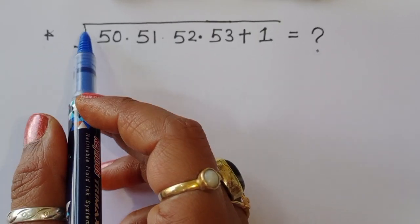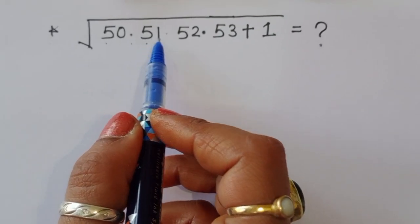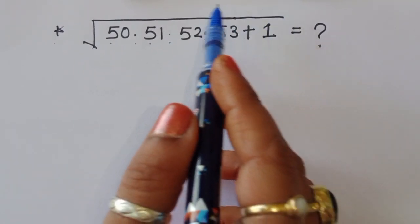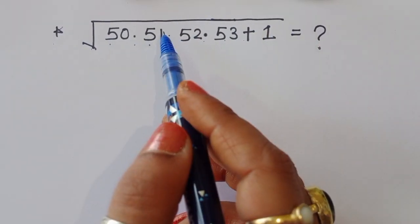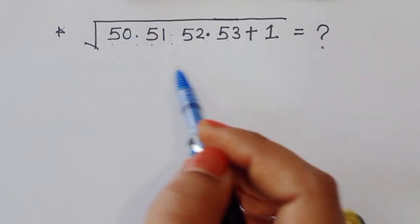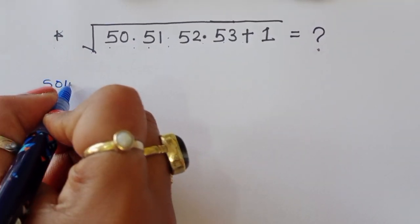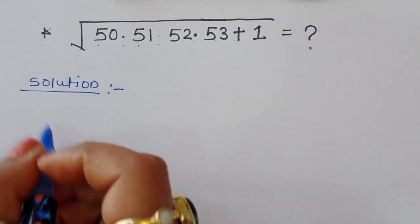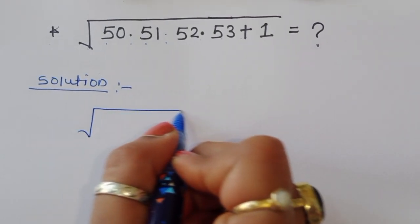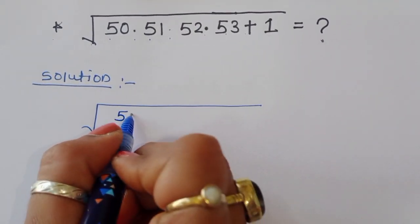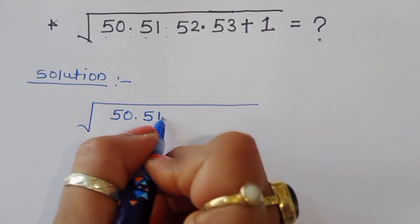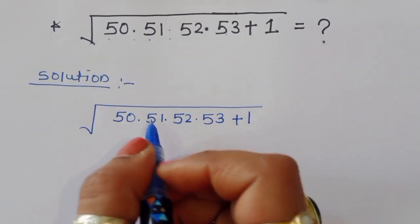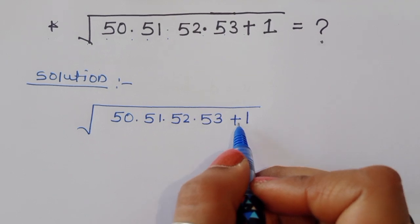The question is: given square root of 50 times 51 times 52 times 53 plus 1, what is the value? We have to find out the value of this term. Solution: square root of 50 times 51 times 52 times 53 plus 1 — these are in increasing order, plus 1.